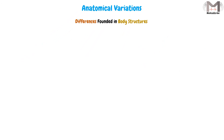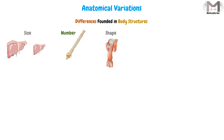The anatomical variations are the differences found in the body structures regarding their size, number, and shape, and also the differences that occur to the structures during the aging process and regarding gender.